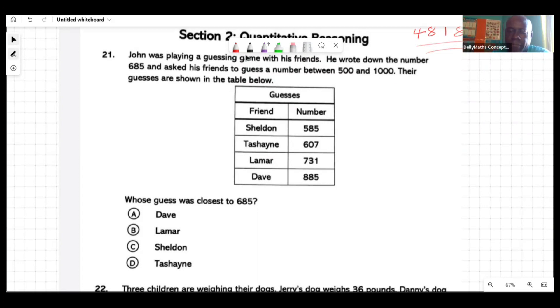We want to decide what mathematical operation you think you'd need to use in order to find a response to this. Anybody want to suggest what would you do in order to find which one of these numbers would be closest? Go ahead Javon. Sir, I would subtract. Alright, exactly. Subtraction is what you need to use.